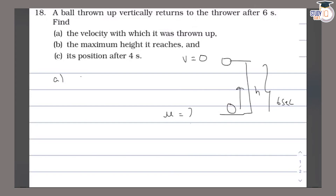We know that the final velocity is 0. We use the first equation of motion: v = u + gt.